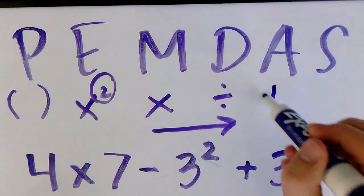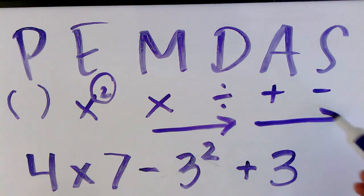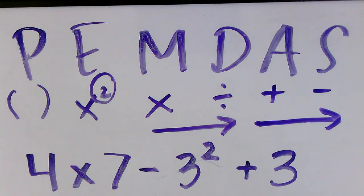For addition and subtraction, these are also equal, so you go left to right. You don't necessarily have to do addition before subtraction if subtraction comes first.